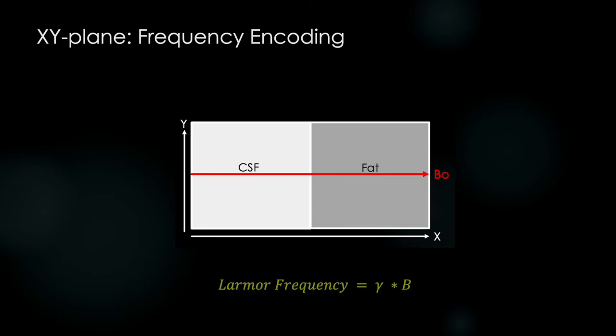Let's go back to the math that governs all of this, the Larmar frequency. Can we change the gyromagnetic ratio? No, it's a constant. What about the magnetic field?